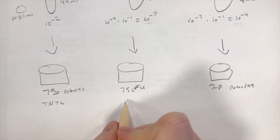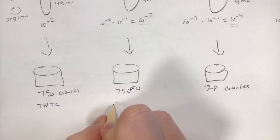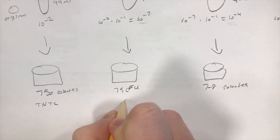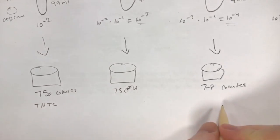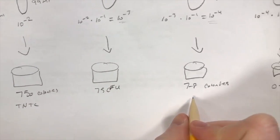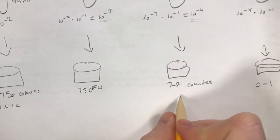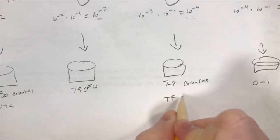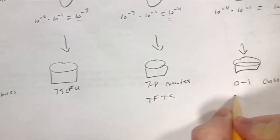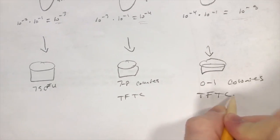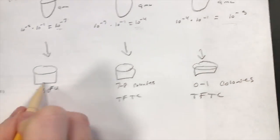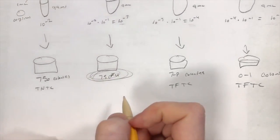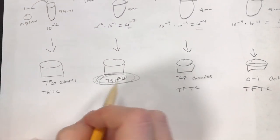The 75 CFU plate is right in the acceptable range, so we're going to keep this one as countable. The 7 to 8 colonies plate is less than 25, so it's too few to count. The 0 to 1 colonies plate is also definitely too few to count. So the 10 to the negative 3 plate is our countable plate, which is the whole point of doing a dilution scheme.